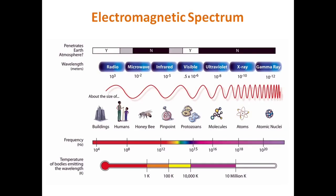In transition zones, some wavelengths may partially penetrate the earth's atmosphere. Out of all available wavelengths, microwaves are in this part. The frequency of microwaves ranges from 300 megahertz to 300 gigahertz.